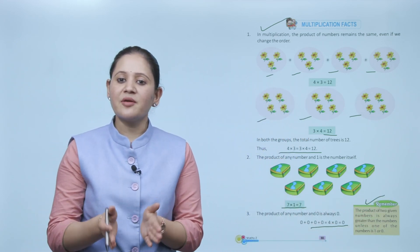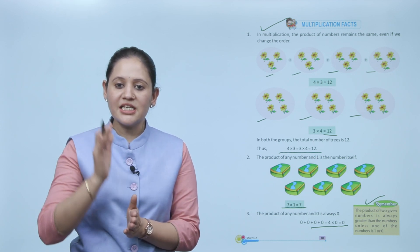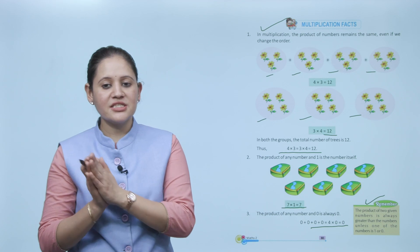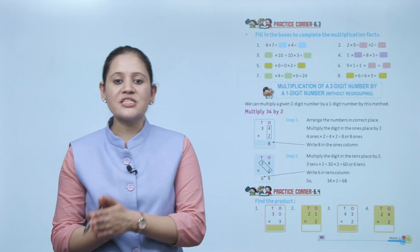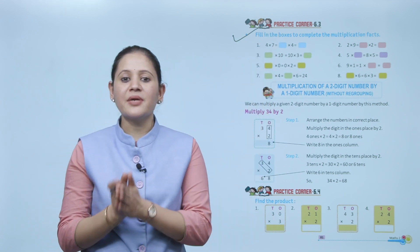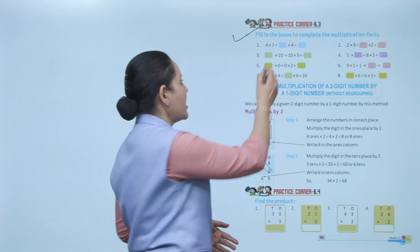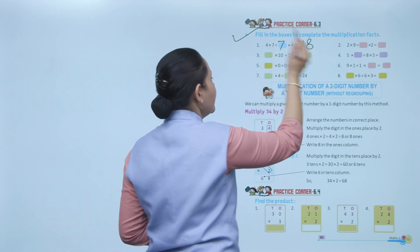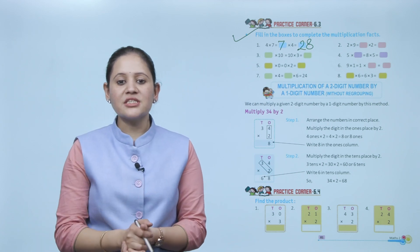Remember: the product of two given numbers is always greater than either number alone. Fill in the boxes to complete the multiplication fact: 4 into 7 is the same as 7 into 4, which equals 28.